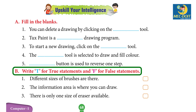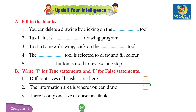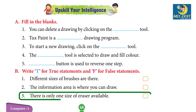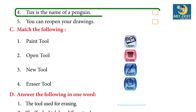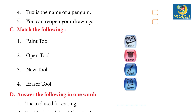B. Write T for true statements and F for false statements: 1. Different sizes of brushes are there — True. 2. The information area is where you can draw — False. 3. There is only one size of eraser available — False. 4. Tux is the name of a penguin — True. 5. You can reopen your drawings — False.